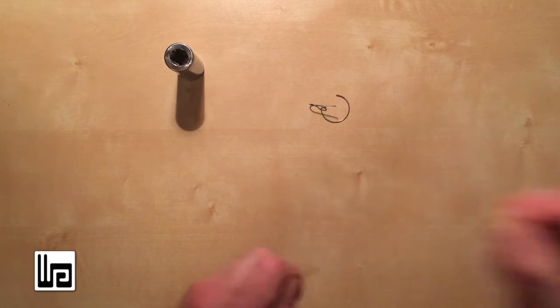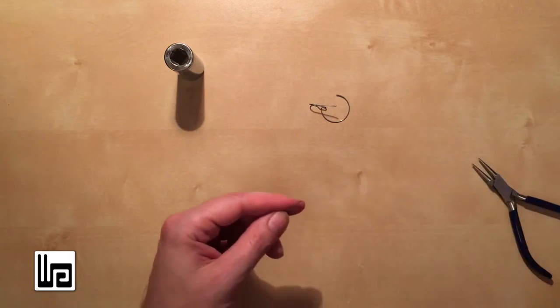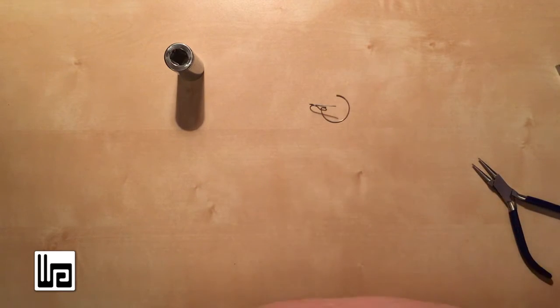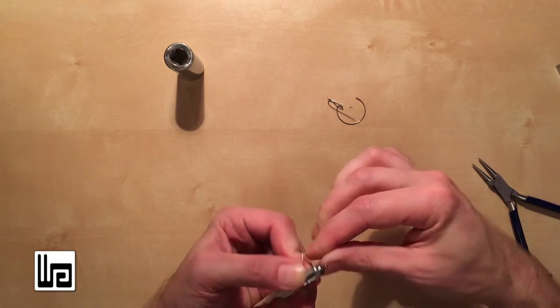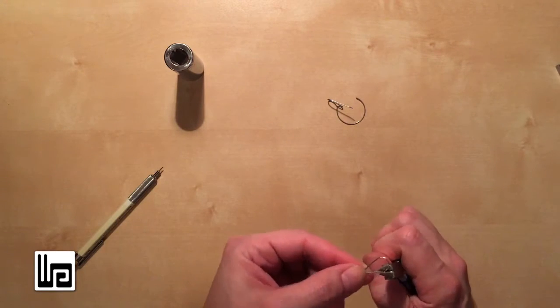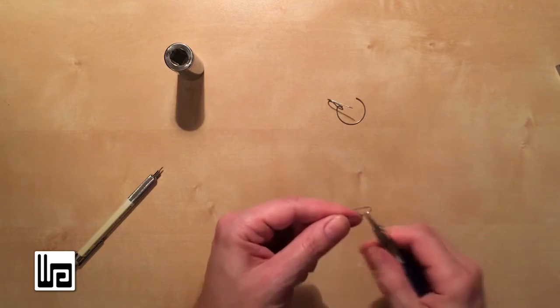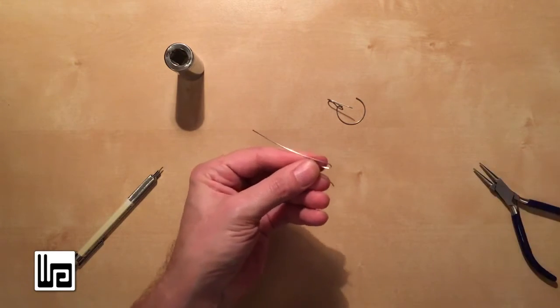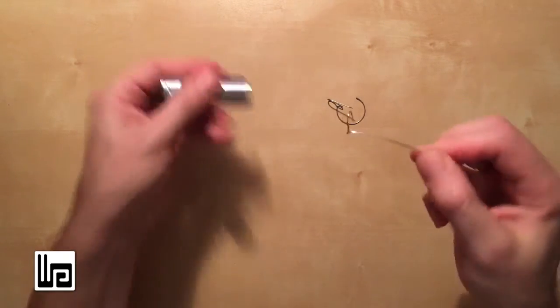And once that's done, you can bend your little tip. And then you need something round, small and round like a pen, to make the loop. Basically just bend it around. Bring it back up. So it looks like an ear wire. And then fold this up. And bend it either left or right.